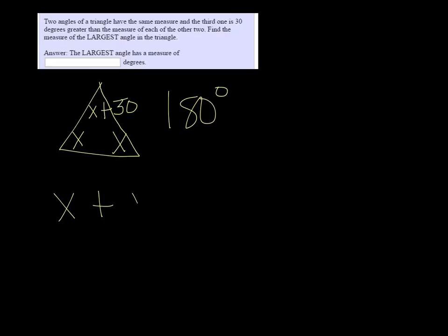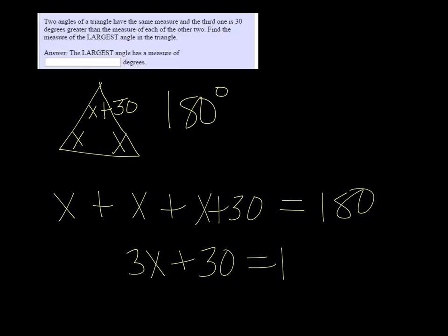So if I add them all together, x plus x plus x plus 30, and have it equal 180, then I get 3x plus 30 equals 180. Subtracting the 30, I have 3x equals 150, and then divide by 3, and x is equal to 50.